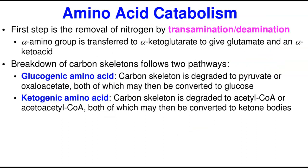The first step in amino acid catabolism involves transamination by transaminase enzymes. Transamination starts from glutamate — glutamate loses its amino group, which is transferred to another alpha-keto acid to form a new amino acid, while the carbon skeleton remains as a keto acid. Alternatively, through deamination — specifically reductive deamination — the reaction uses NAD+ or NADH as a cofactor since it is a redox reaction.